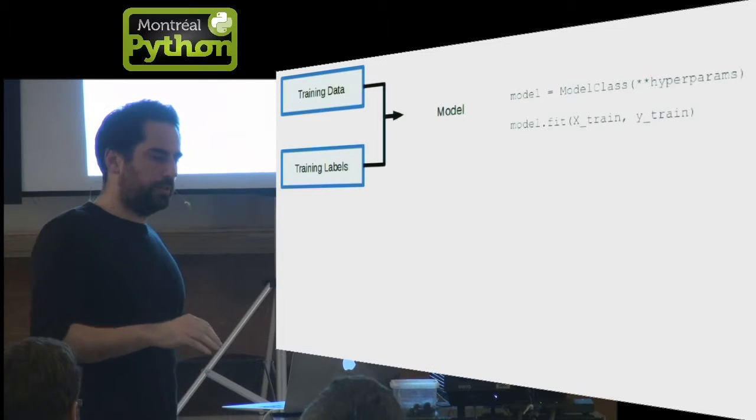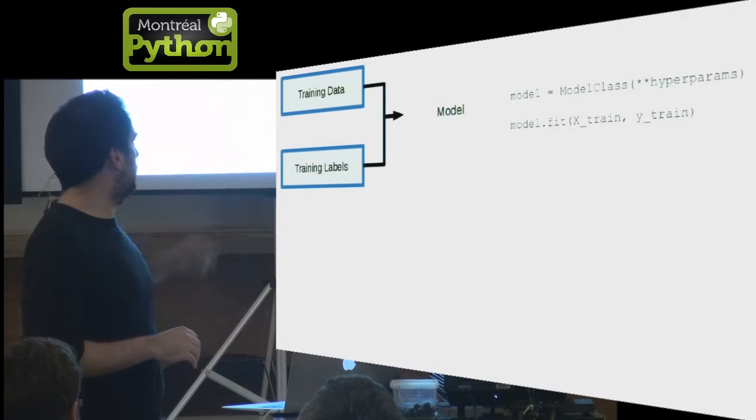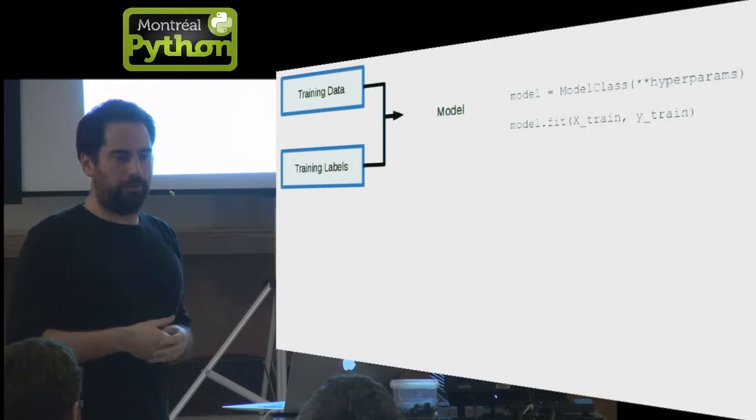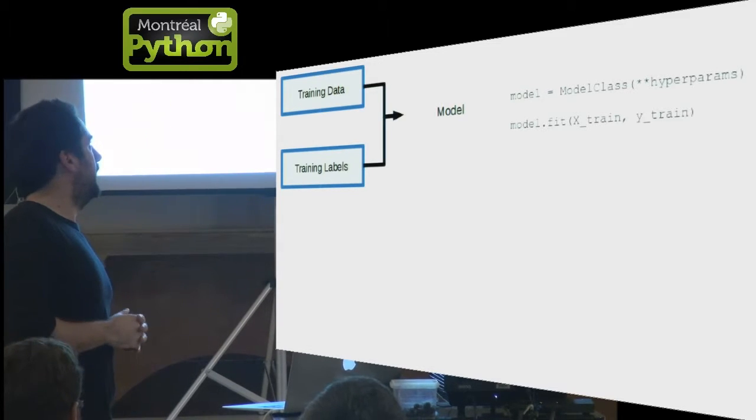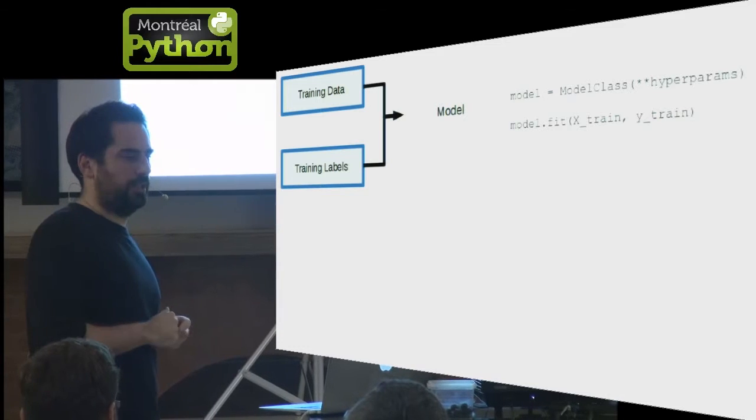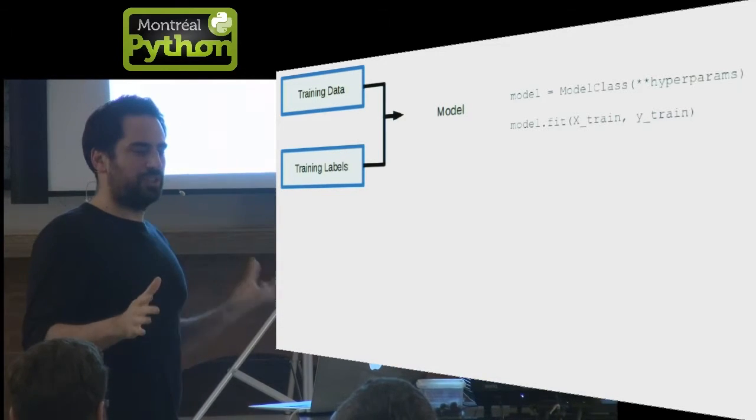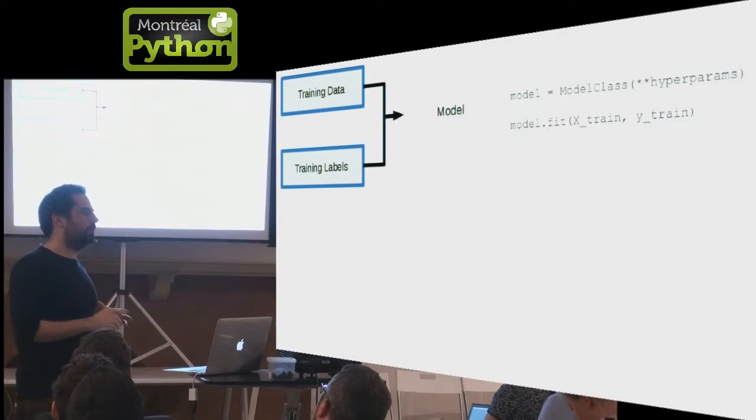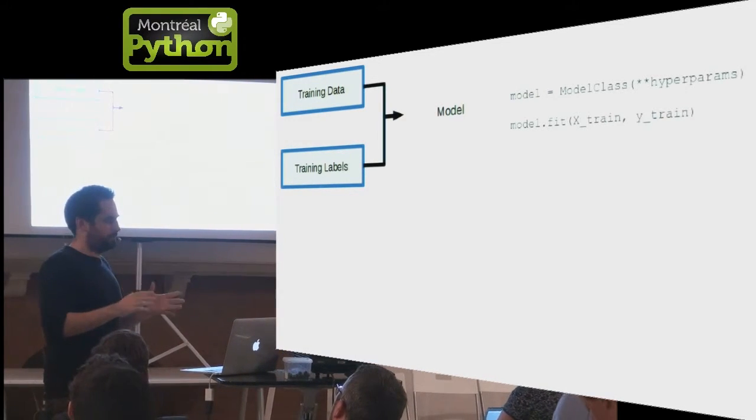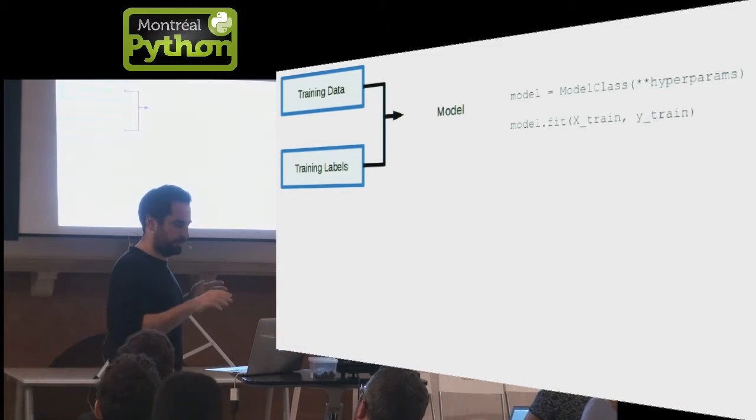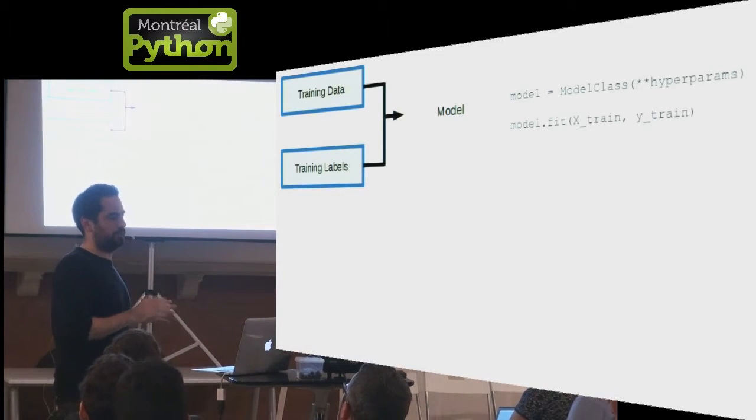In scikit-learn, we do that by importing a model class. We give it some parameters, a dictionary of parameters with possible default values. Those are called hyperparameters in machine learning because we like fancy words. This is by opposition to the internal parameters of the model that are trained from the data. So the user parameters and the data parameters are different.